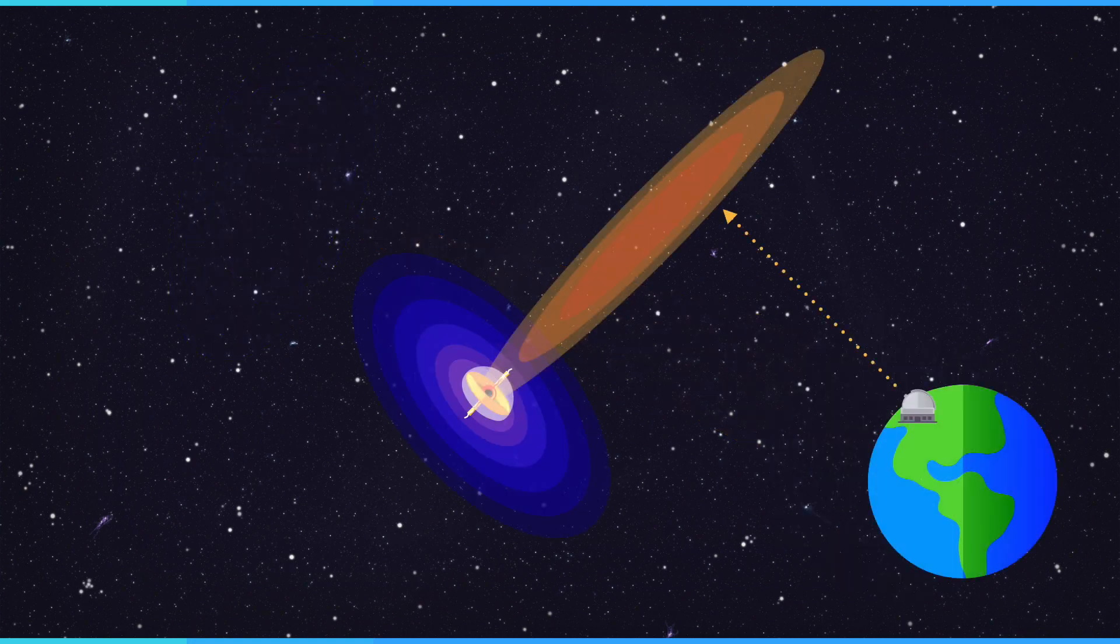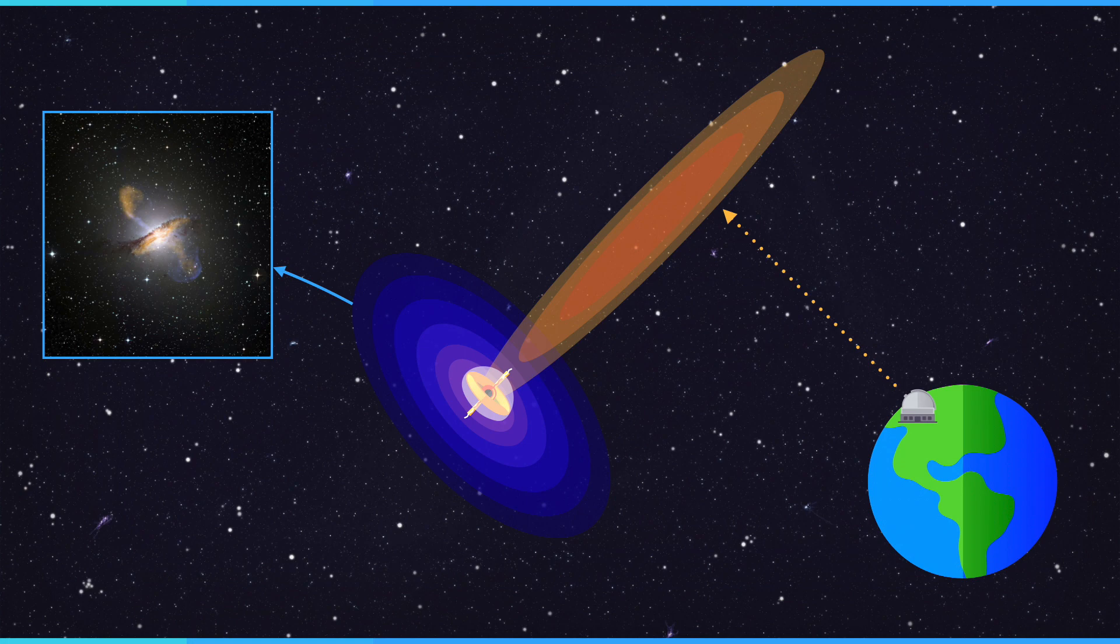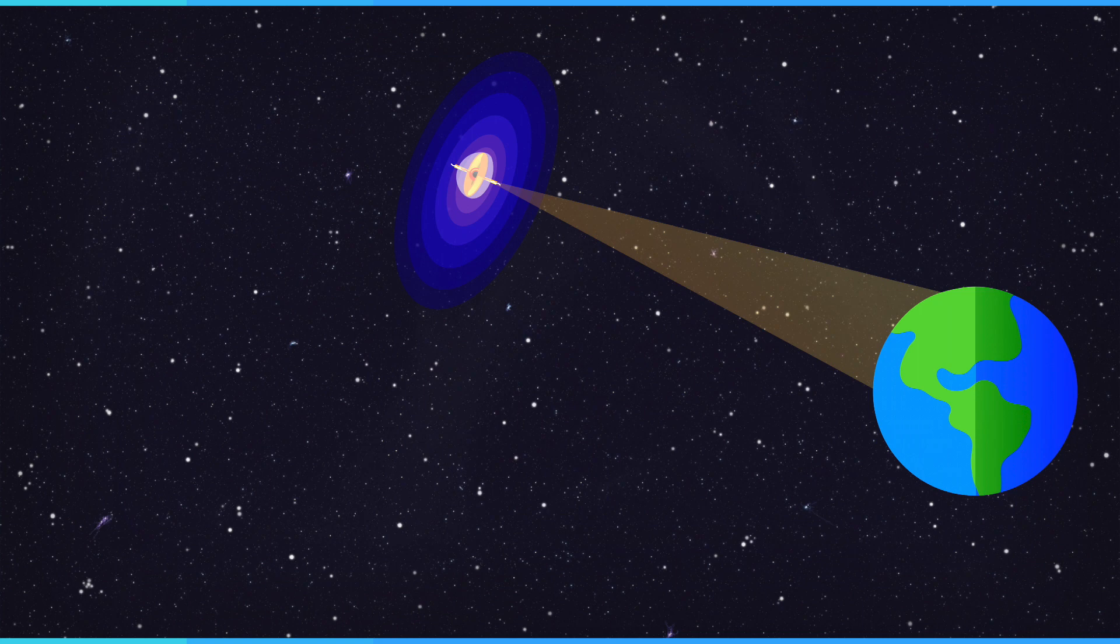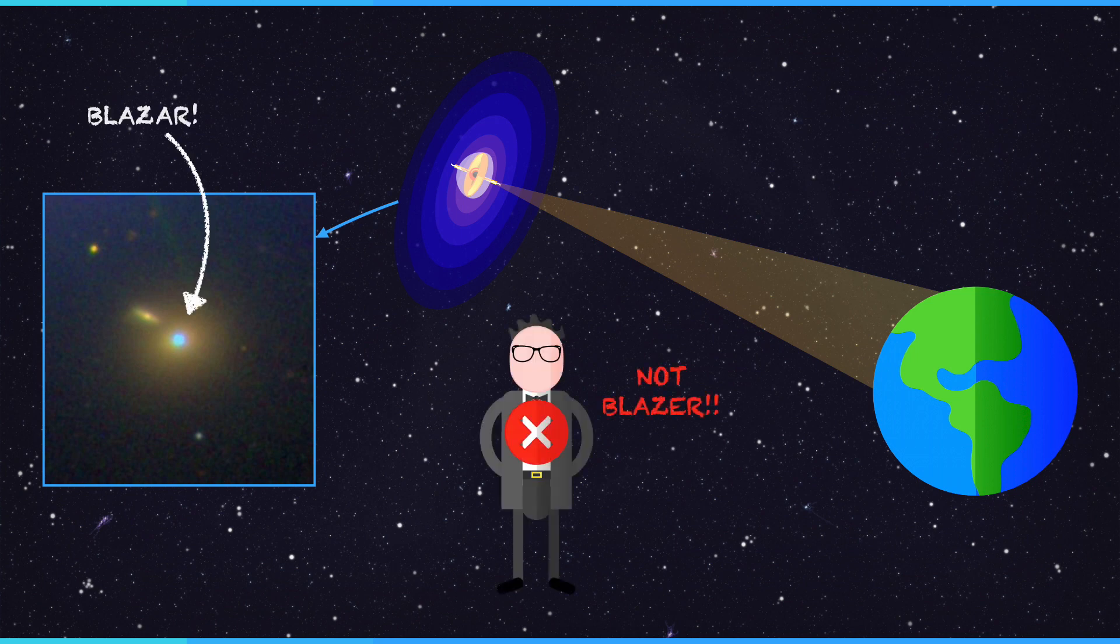If the jets are perpendicular to the Earth's line of sight, then they may never be detected. Instead, we observe what's known as a radio galaxy. A galaxy that spews out large amounts of radio signals. In some rare aspects, the jets of the quasars may actually be directly aligned with Earth. This gives astronomers an excellent field of view of the active nucleus. This rare object is called a blazar, not a blazer.